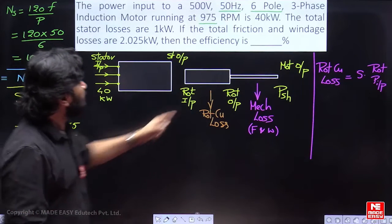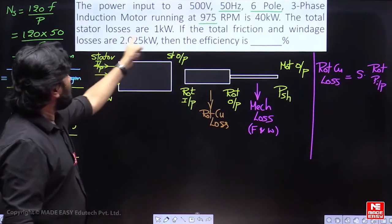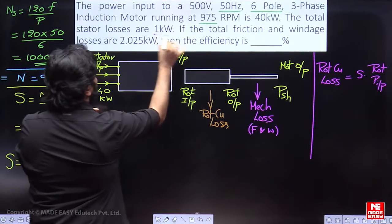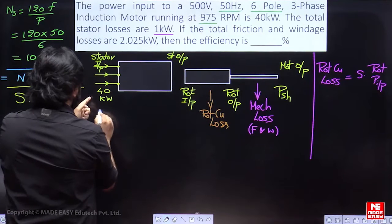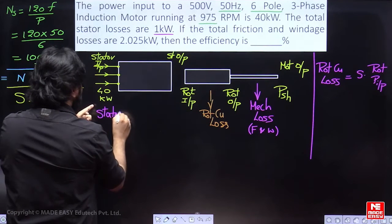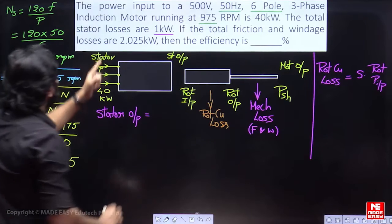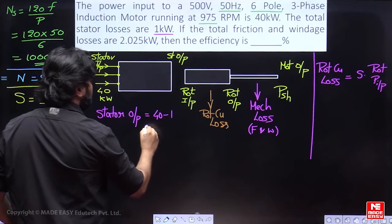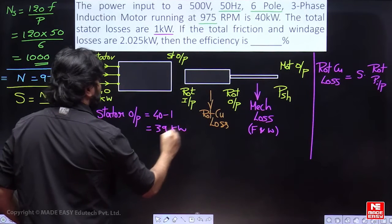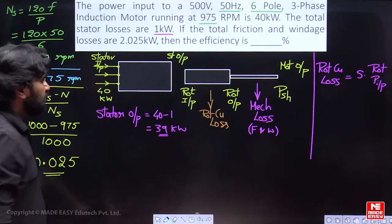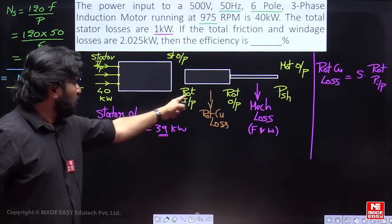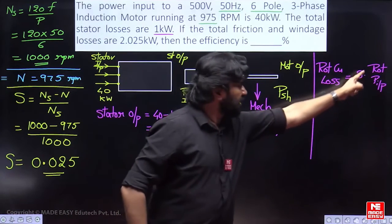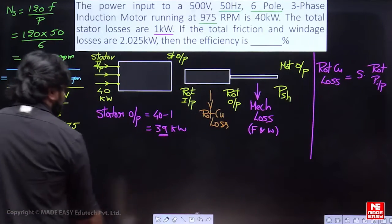Let us solve the question now. It is clearly mentioned, input is 40 kilowatt and the stator losses are 1 kilowatt. Total stator losses means stator core plus mechanical. So, remove 1 kilowatt from this. So, stator output is 40 minus 1 kilowatt. Now, stator output is 39 kilowatt, rotor input is 39 kilowatt. Then, what is the copper loss? Slip times rotor power input.